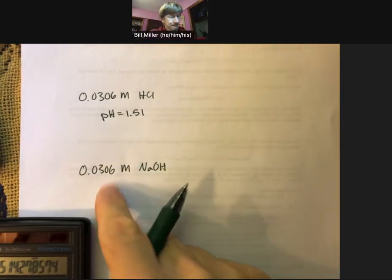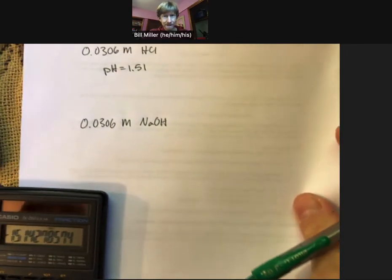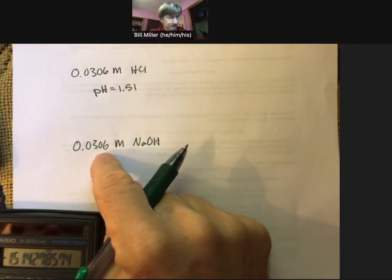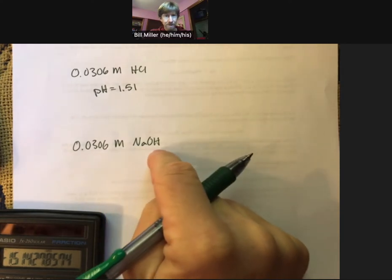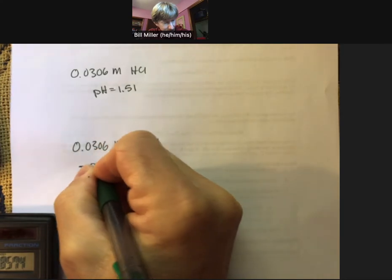Now similarly, if you do that for the base, and you've got 0.0306 M sodium hydroxide and hit the log button, that will give you the pOH.